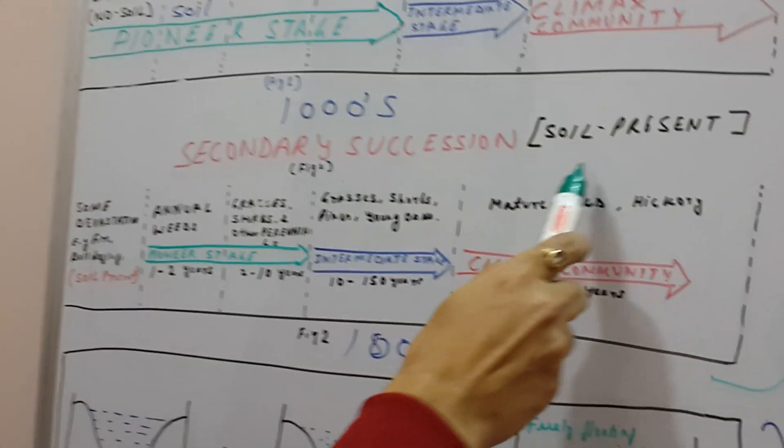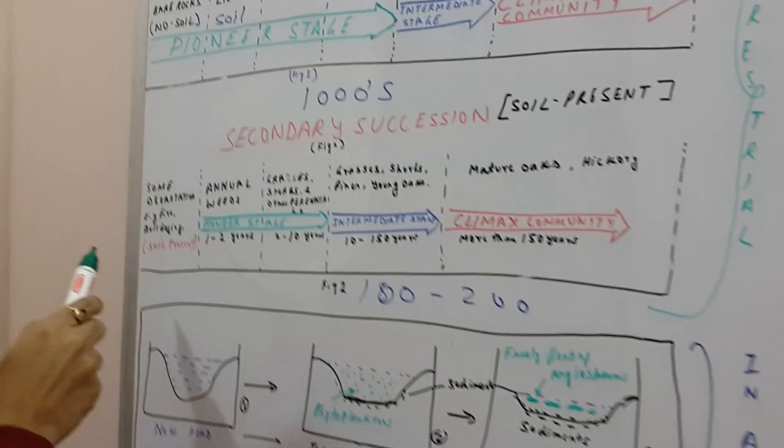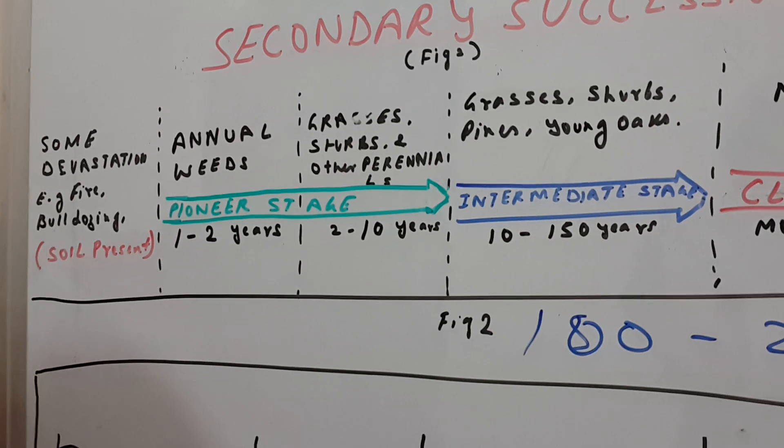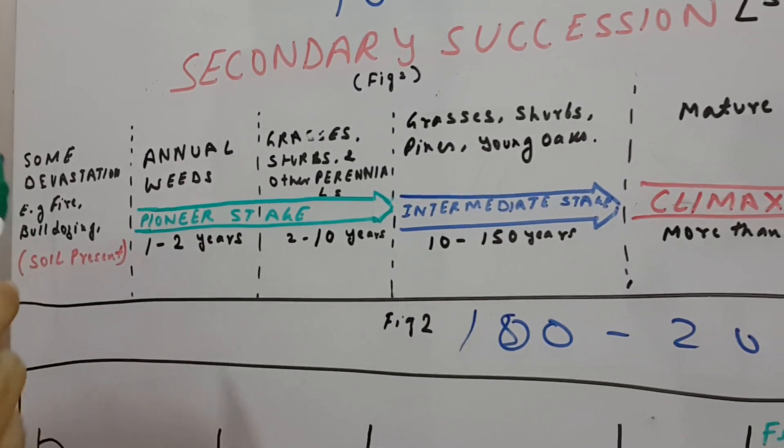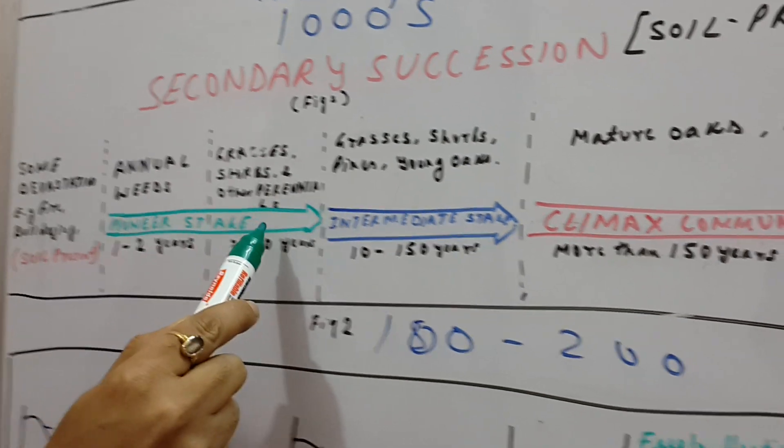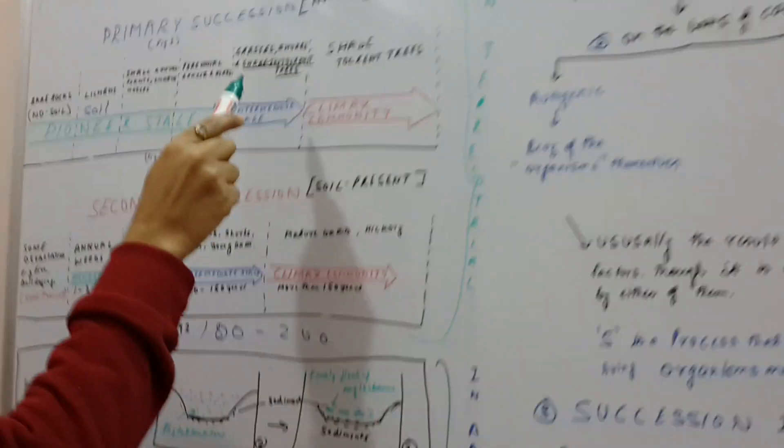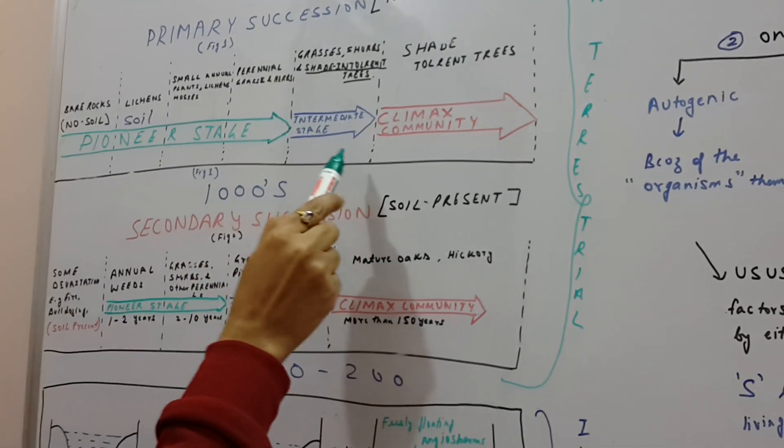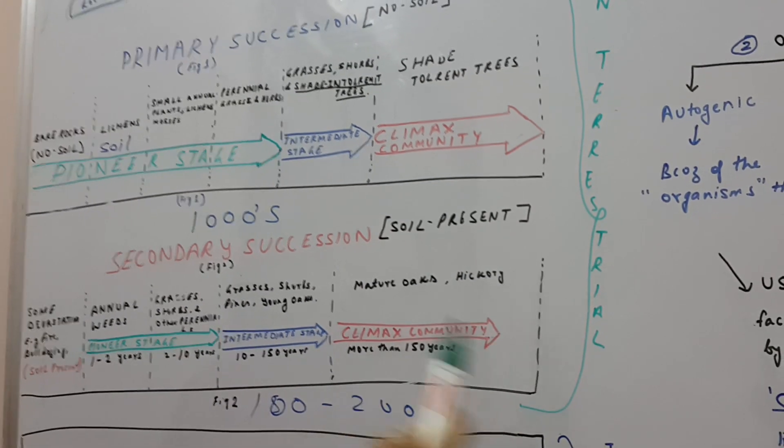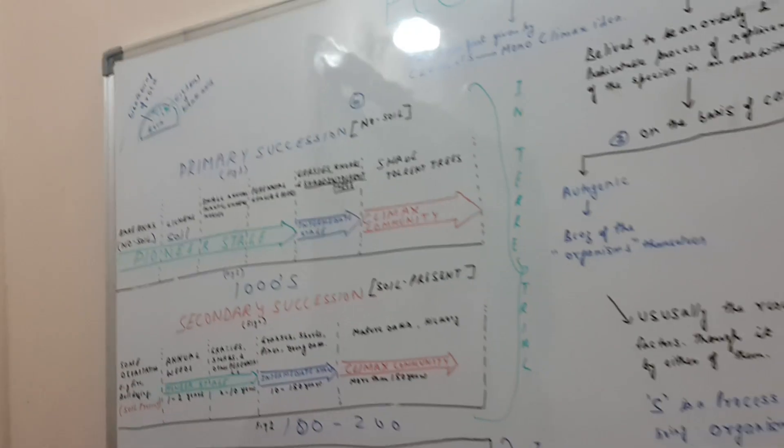Now let's look at secondary succession. Secondary succession refers to a process where soil was present because life had earlier existed. For example, there was a certain forest. Due to forest fire, the forest was destroyed but soil was present, and with soil, seeds and spores were also present. So this is the pioneer stage, we have intermediate stage, and then ultimately the climax community. The only difference is that of time. Primary succession takes thousands of years, and secondary succession takes hundreds or 200 or 300 years, because soil was present as well as spores and seeds were already present.